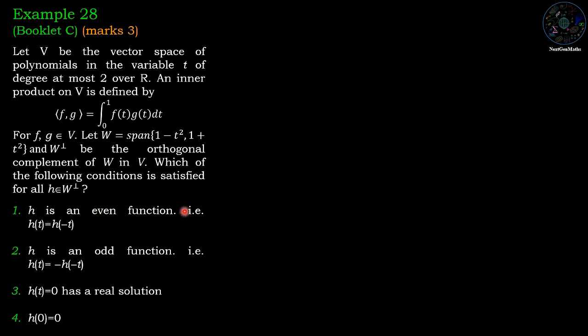First option: h is an even function, that means h(t) equals h(-t). Second option: h is an odd function, that means h(t) equals minus h(-t).